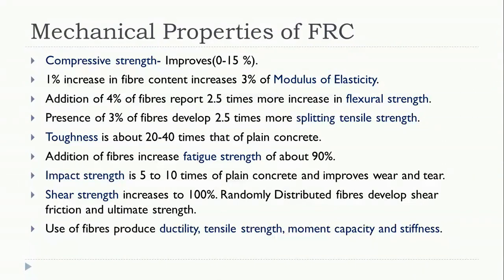The compressive strength of FRC has been readily improved by using fibers in the concrete matrix — it improves strength by 0 to 15 percent. By adding 1 percent fiber content, it increases the modulus of elasticity of concrete by 3 percent compared to normal concrete. Addition of 4 percent fibers increases the flexural strength by 2.5 times compared to normal concrete.